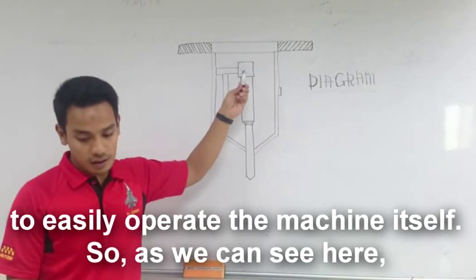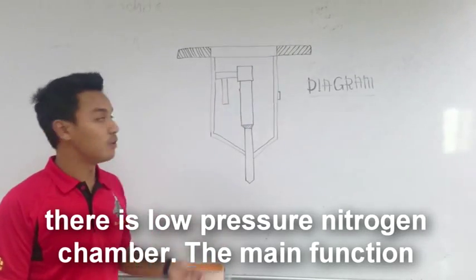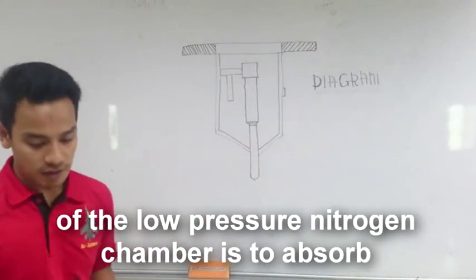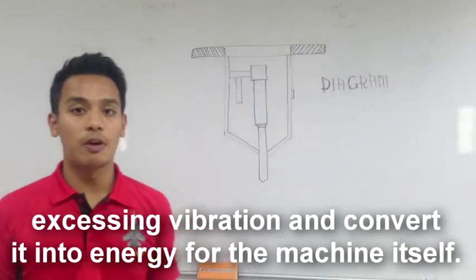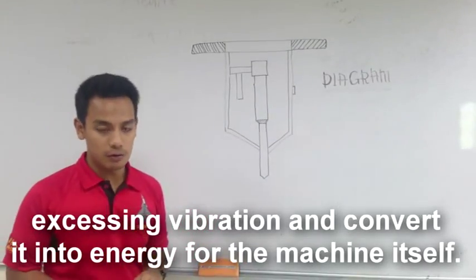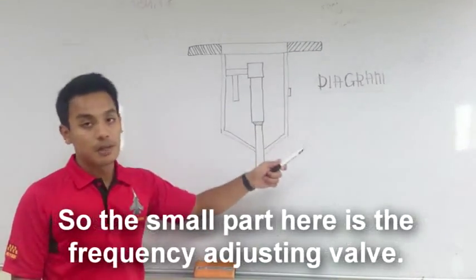As we can see here, here is the low pressure nitrogen chamber. The main function of the low pressure nitrogen chamber is to absorb excessive vibration and convert it into energy for the machine itself.